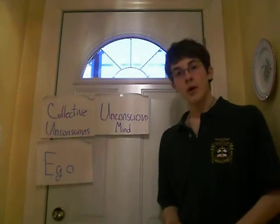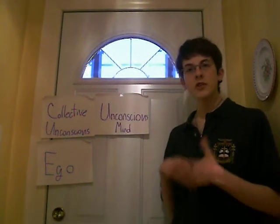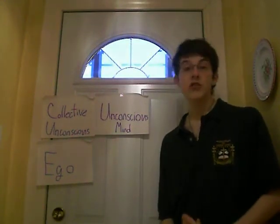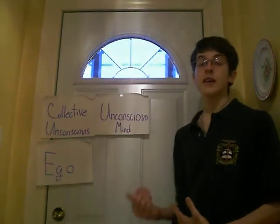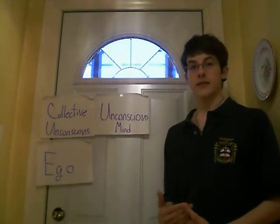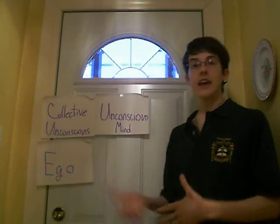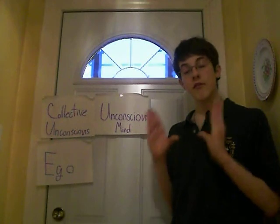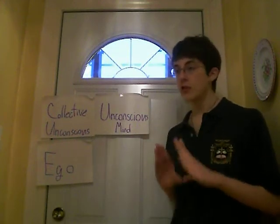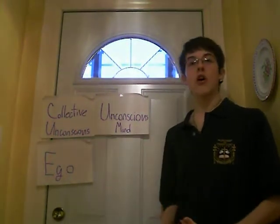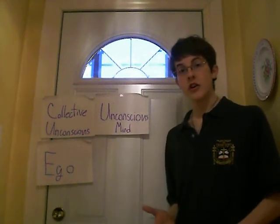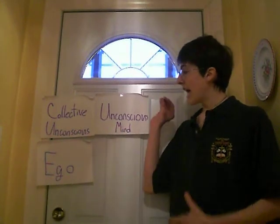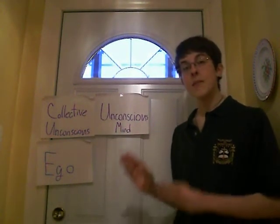Jung then went on to theorize about what he called the collective unconscious, which is a form of unconscious mind that influences how society makes decisions, much as the unconscious mind influences the conscious mind. It contains a massive amount of collectively stored memory of archetypes, images, mythology, and types of people that are passed on from generation to generation and are shared by all people, influencing how everybody sees the world in the same manner.